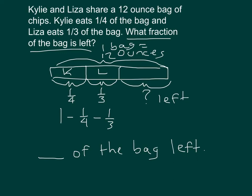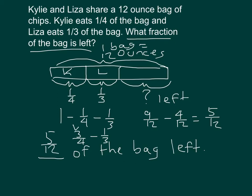I've written out the expression to solve: one minus one fourth leaves three fourths, then subtract one third. I need a common denominator of 12: three fourths equals nine twelfths, one third equals four twelfths, and nine twelfths minus four twelfths is five twelfths. So five twelfths of the bag is left. Writing it in the bar model: one fourth plus one third plus five twelfths — converting to twelfths gives four twelfths plus three twelfths plus five twelfths, which does equal one whole. Five twelfths of the bag is left after Kylie and Liza share chips.